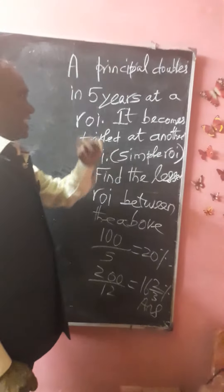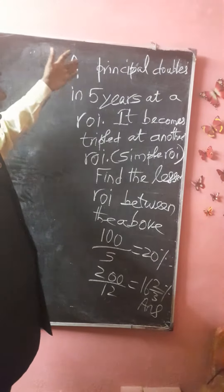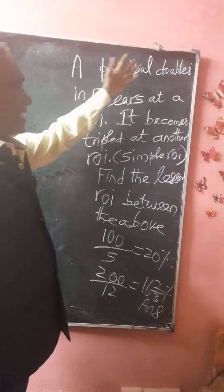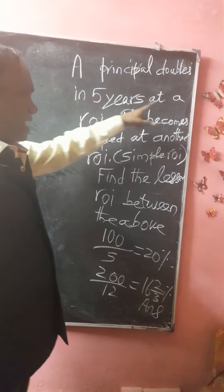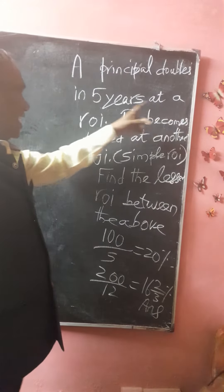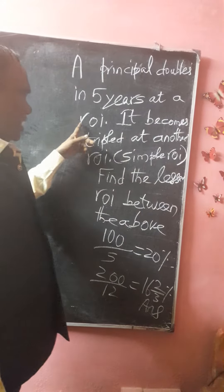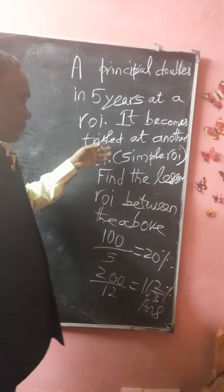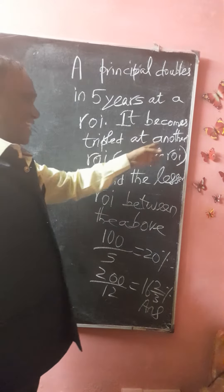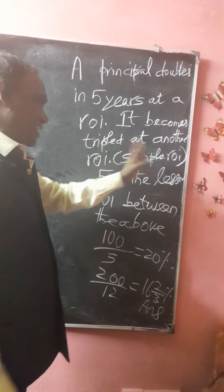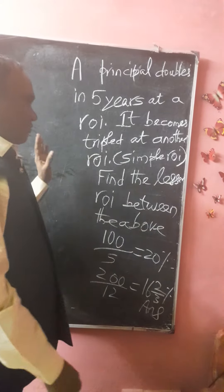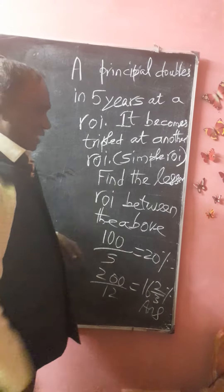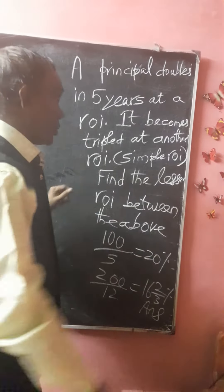Good evening, friends. A principle doubles in five years at a particular rate of simple interest. It becomes tripled at another rate of simple interest. Find out the lesser rate of interest between the above.